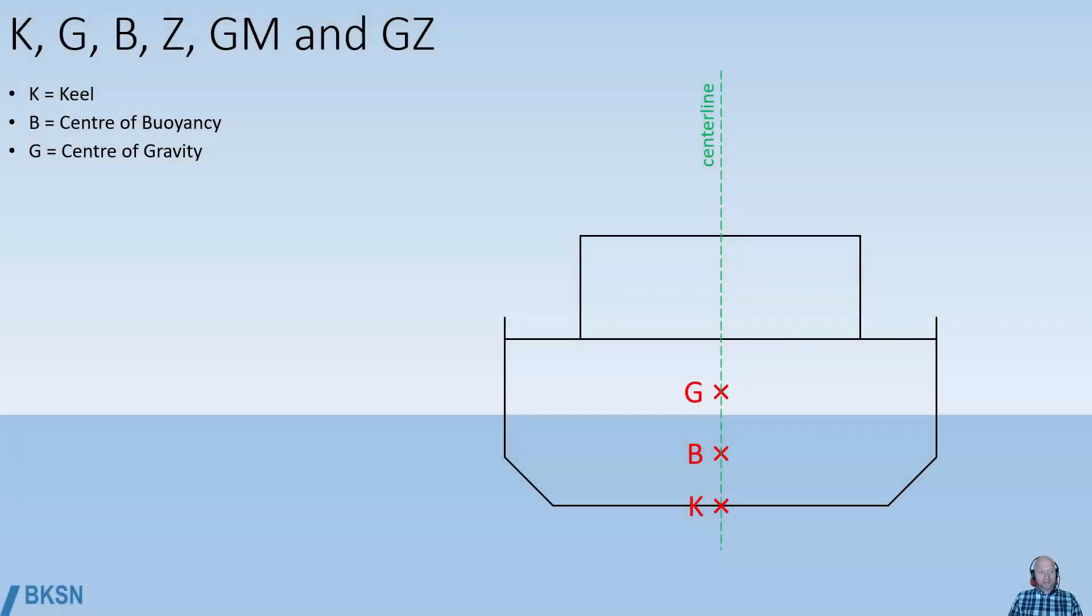K, that's the keel, B is the center of buoyancy, and G is the center of gravity.